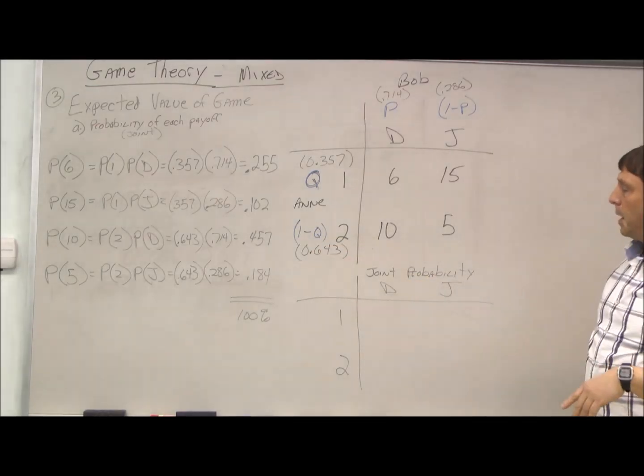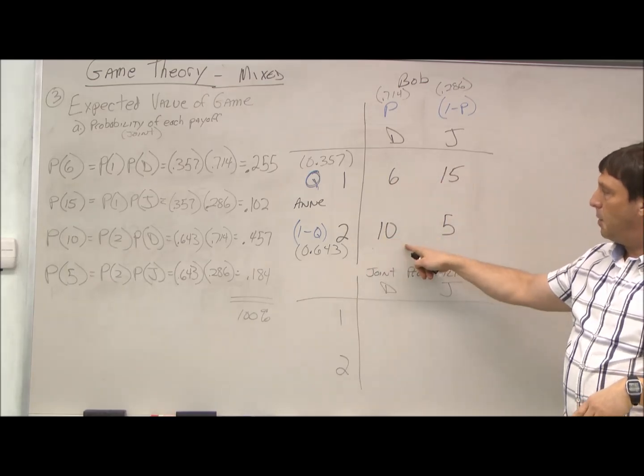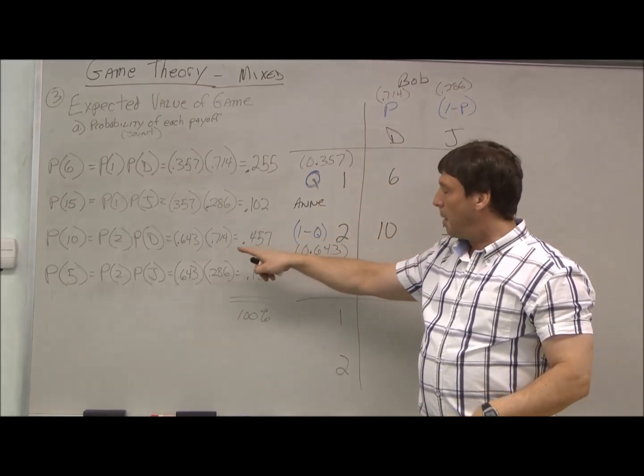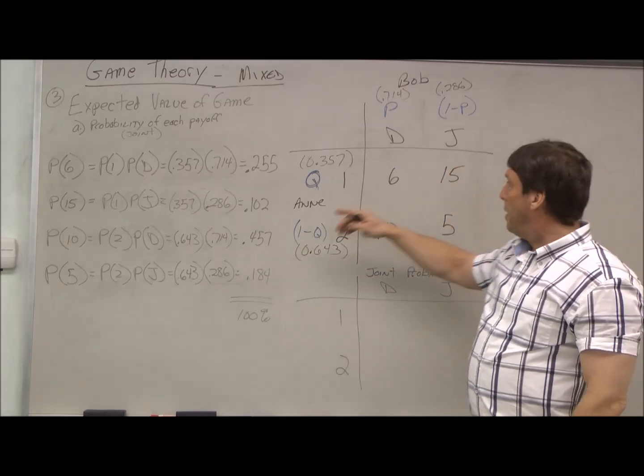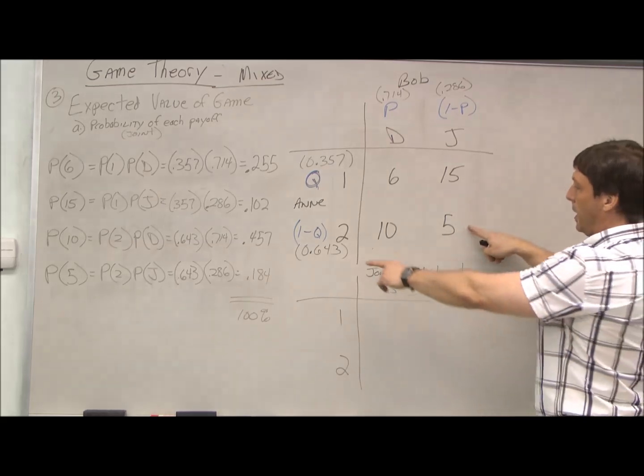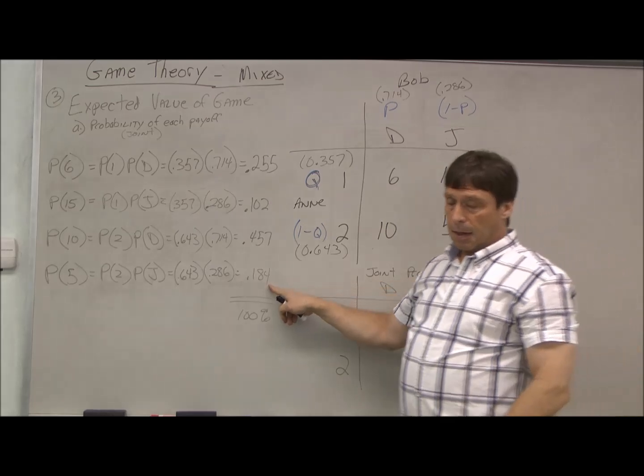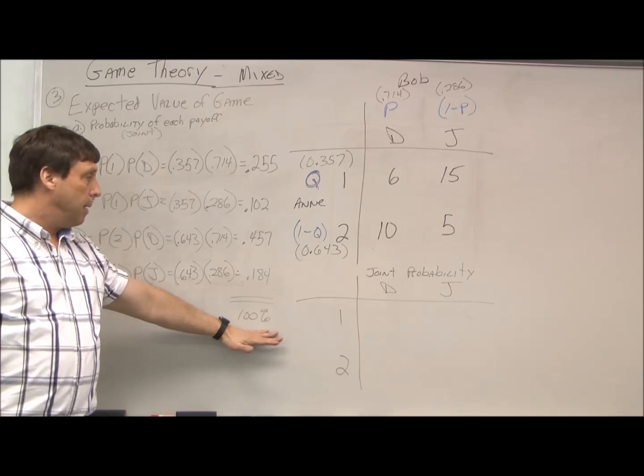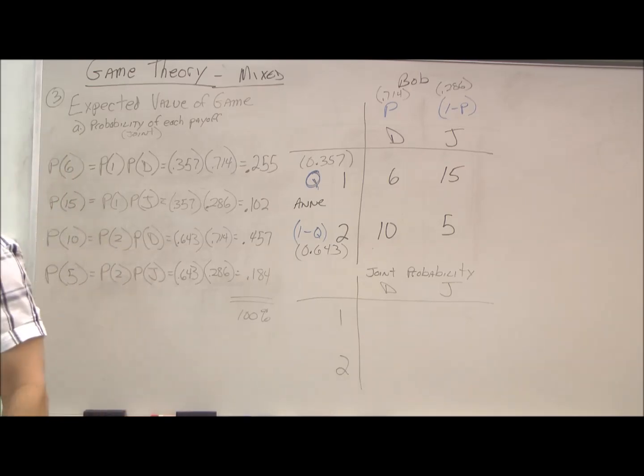We can do the same thing for 10, which is the intersection of D and two, so the probability of two times the probability of D multiplied together. And finally for J and two, so those two probabilities give us a little over 18%. If we added up all our probabilities, just as a check, this should be 100% of course. If those are 100% of our possibilities, it makes sense that they add up to 100% probability.